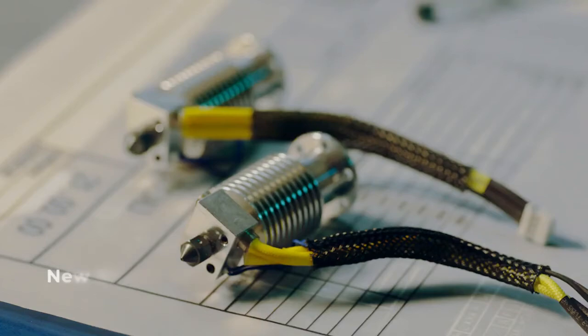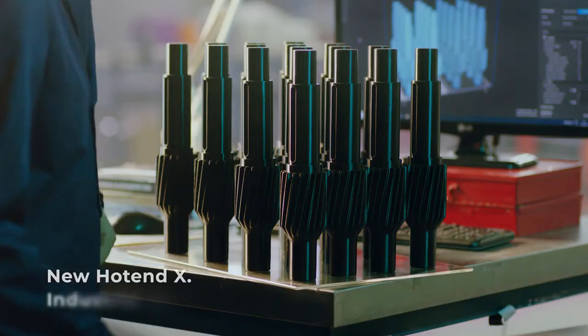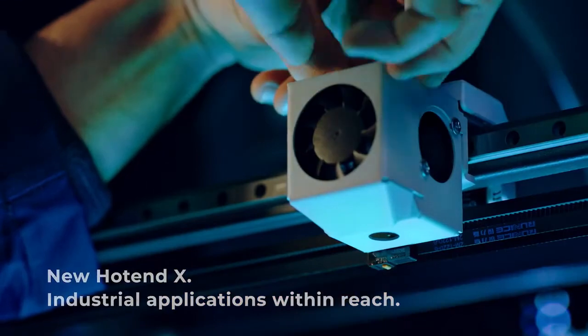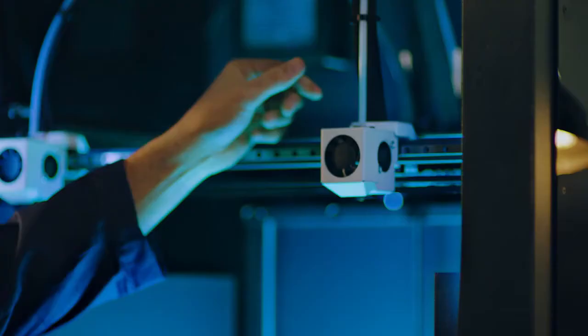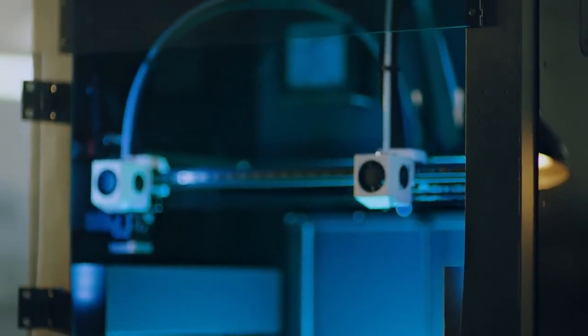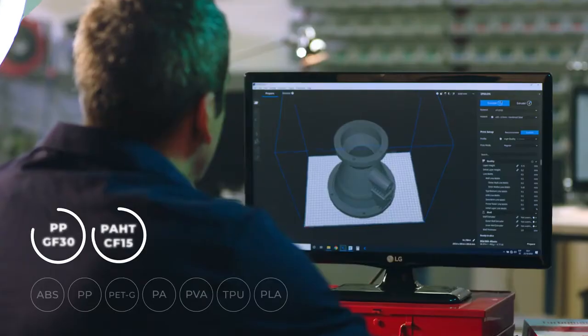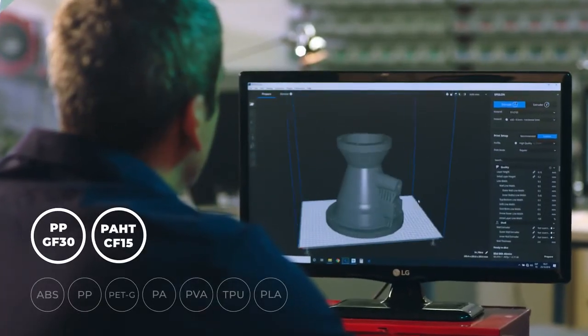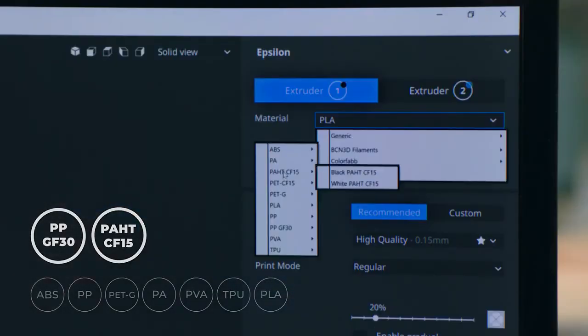Our new hotend X, made from a special alloy of tool steel, opens up a whole new world of industrial applications. When paired with the BCN 3D Epsilon, it allows you to print with fibre-filled materials, so you can print stiffer parts for the most demanding jobs.